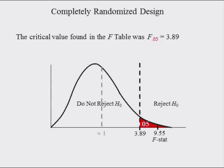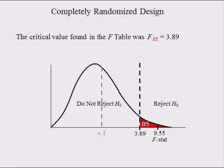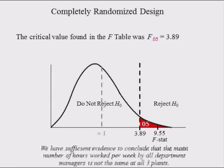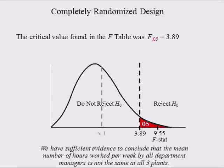Since the F-stat is equal to 9.55 and it is in the rejection region, the F-stat is large, suggesting the mean square due to treatments is greater than the mean square due to error. This implies the null hypothesis is probably true, meaning we have sufficient evidence to conclude that the mean number of hours worked per week by all department managers is not the same at all three plants.